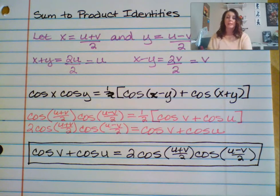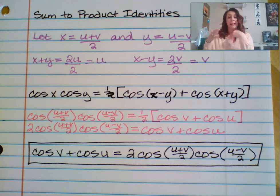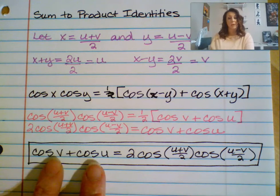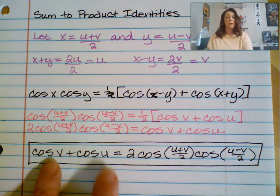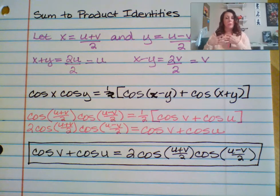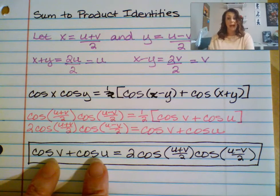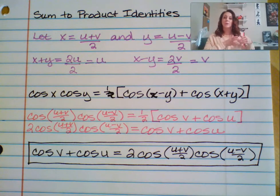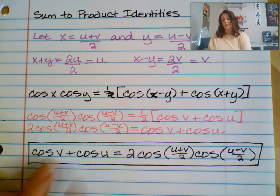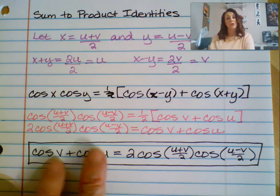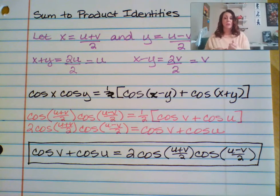We've had sine and cosine sums and differences before, but those were things like cosine of (u plus v), where you were adding the two angle measures. Here, we're looking at the sum of two cosine values — cosine of v and cosine of u are two ratios. The sum-to-product identities give us a way to add two sine or cosine values for individual angles. That's the first of our four sum-to-product identities.